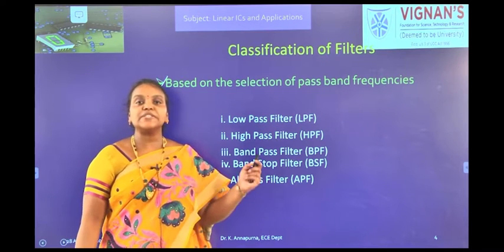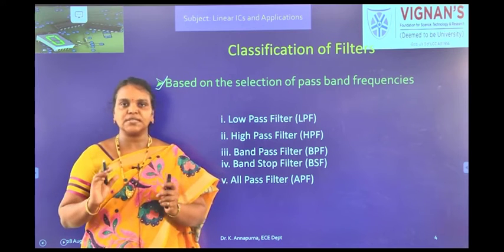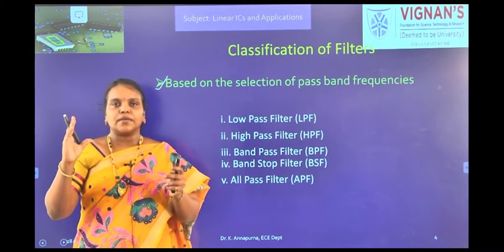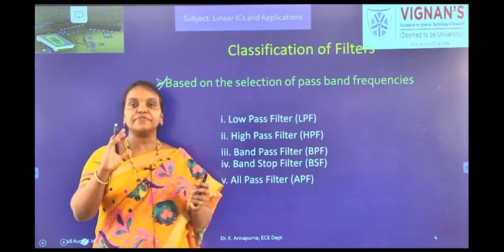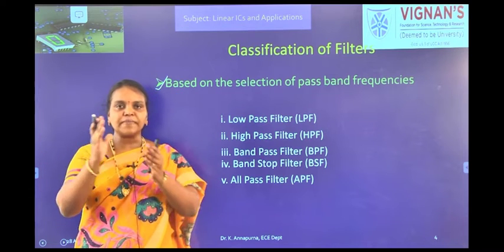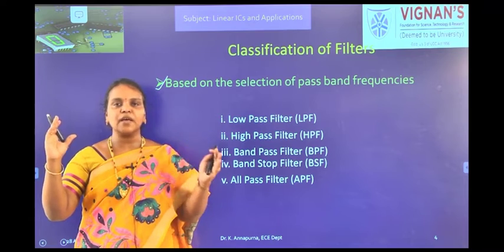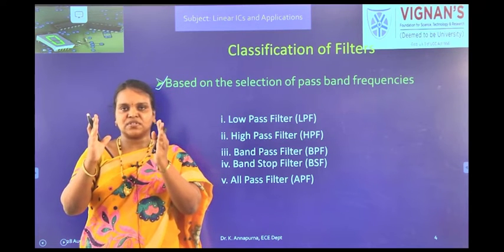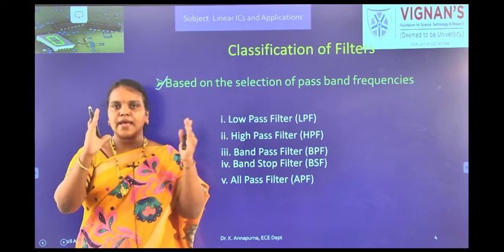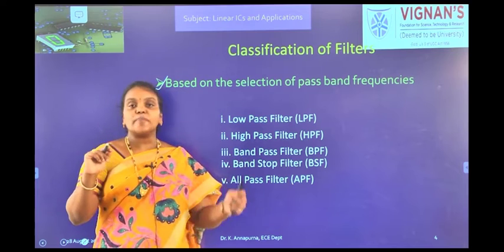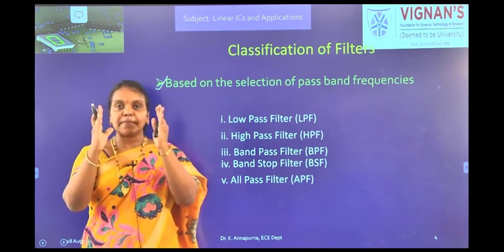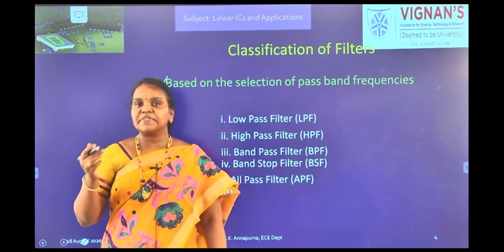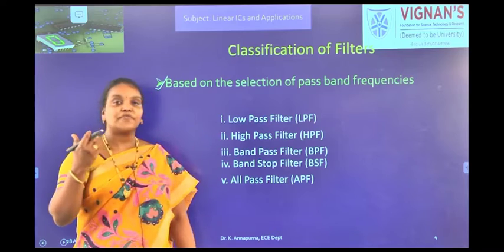Low pass filter is a filter which passes only low frequency signals and stops the high frequency signals — low frequencies meaning up to the cut-off frequency. Similarly, high pass filter passes the high frequency signals, from cut-off frequency to infinite frequency, and stops the low frequency signals. Band pass filter passes a band of frequencies and stops the frequencies below that band as well as above that band. Band stop filter stops a band of frequencies and passes the remaining frequencies. All pass filter passes all frequency signals but provides a good phase response.